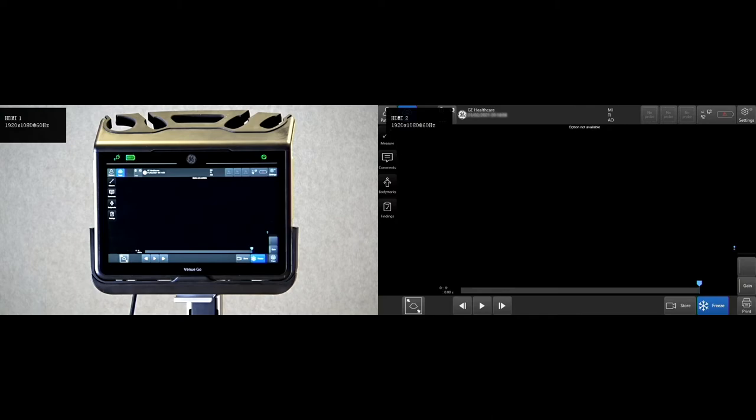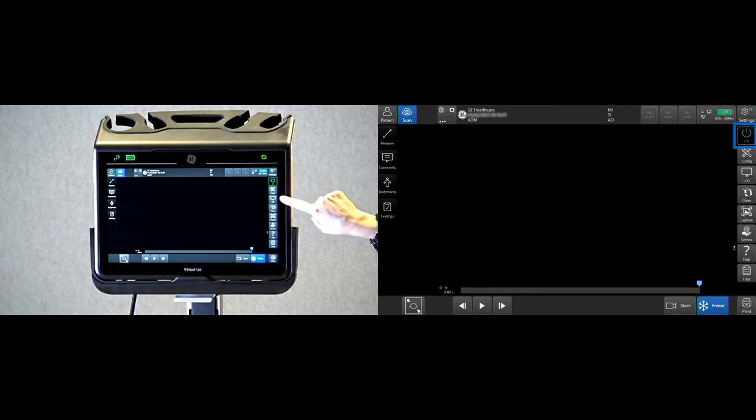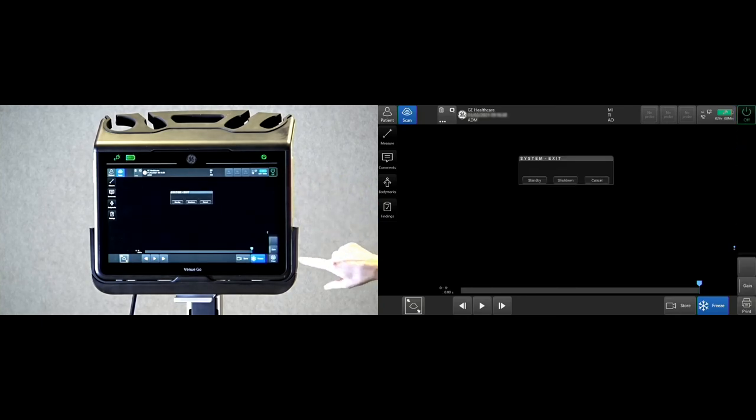To shut down or place the system in standby, press the power button. If standby is chosen, the system will reboot in six seconds. When shutdown is selected, the system will reboot in about 40 seconds. If the power button did not respond when attempting to shut down, tap settings and tap off. This option is configurable.